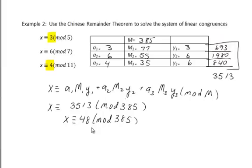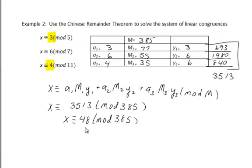Reducing 3513 mod 385 gives 48. Let's check: 48 divided by 5 has remainder 3 ✓; 48 divided by 7 — since 7 goes into 42, the remainder is 6 ✓; and 48 divided by 11 has remainder 4 ✓. So 48 satisfies the system.